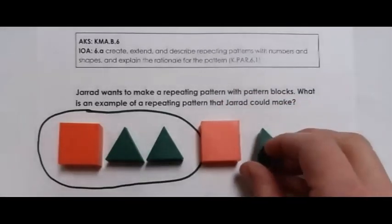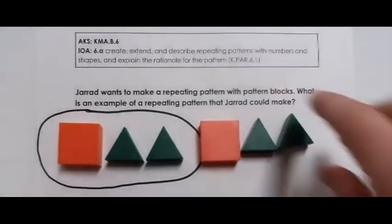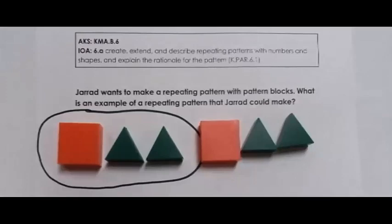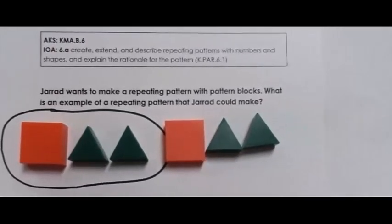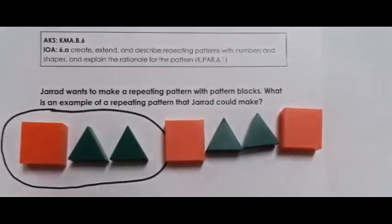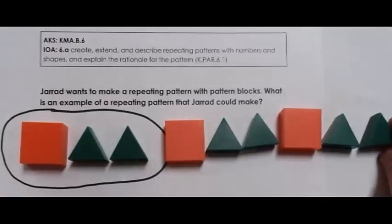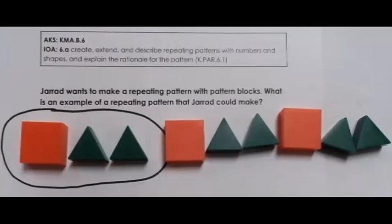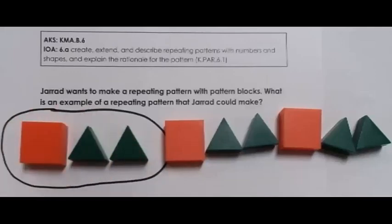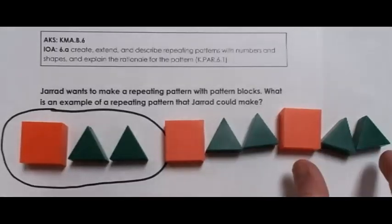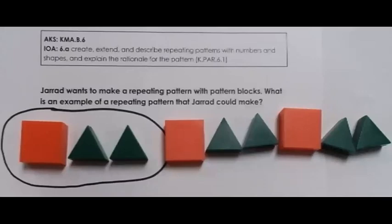With the core of square, triangle, triangle repeated, we now have a repeating pattern. Jared could repeat that core again with another square, triangle, triangle. Here on screen: the core — square, triangle, triangle — repeats, and is even repeated a third time. This is an example of creating patterns at the concrete level.